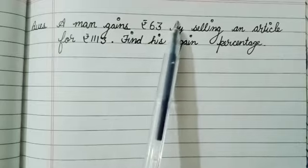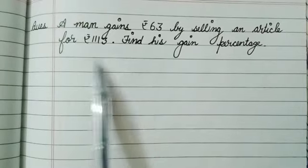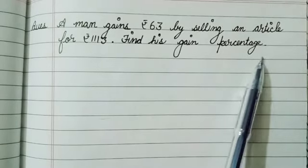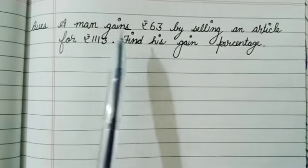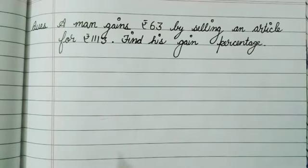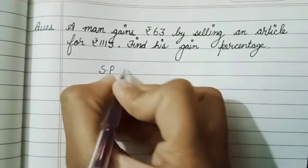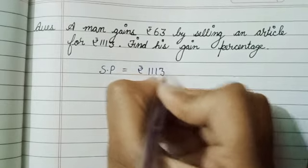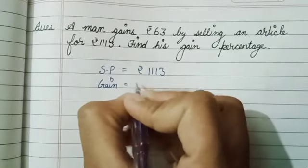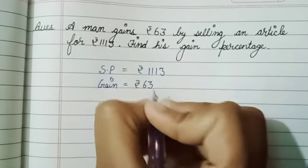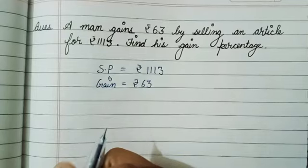In this question, gain means profit is given, and selling an article means SP is given. We have to find the gain percentage. First we need CP, then we can find the gain percent. SP (selling price) equals rupee 1113 and gain (profit) equals rupee 63.